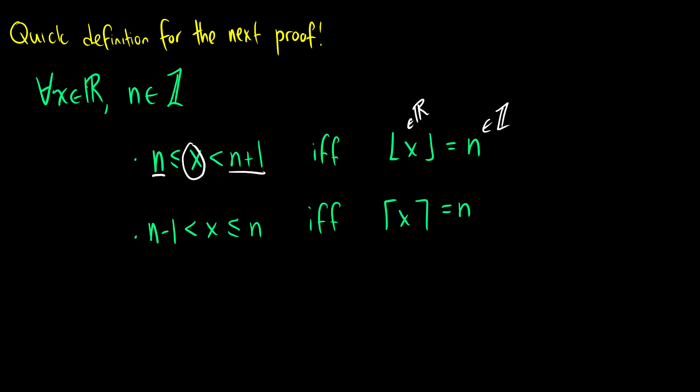For the ceiling, it's pretty much the same definition. What we're saying here is that if the ceiling of x is equal to n, then x is going to be less than or equal to n but strictly greater than n minus 1.